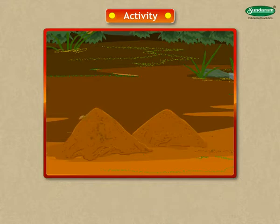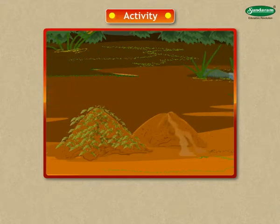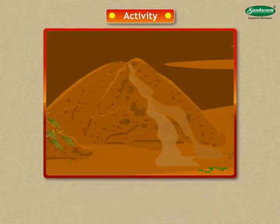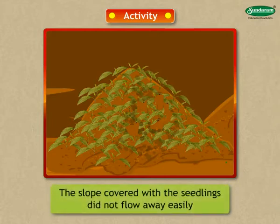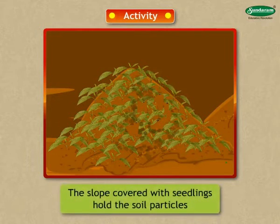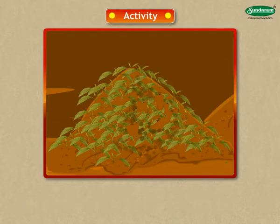In 4 or 5 days, little seedlings will come out. When the hill is completely covered with seedlings, pour water on the entire hill from a height using a watering can. From which side of the hill does more soil flow away? The side that did not have the seedlings lost more soil. The slope covered with seedlings holds the soil particles and helps water to seep slowly into the soil, which prevents the flow of soil.